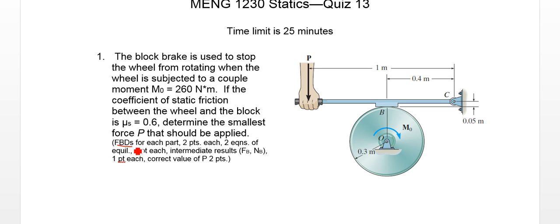We get points for a free body diagram, points for equations of equilibrium, a point for intermediate results, and the correct value of P is worth two points.